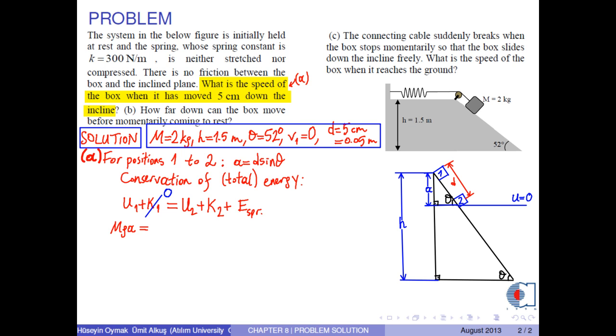The potential energy of the box is zero at point 2. The kinetic energy is 1 over 2 times M times V squared. The spring energy becomes 1 over 2 times K times D squared because the spring stretches.